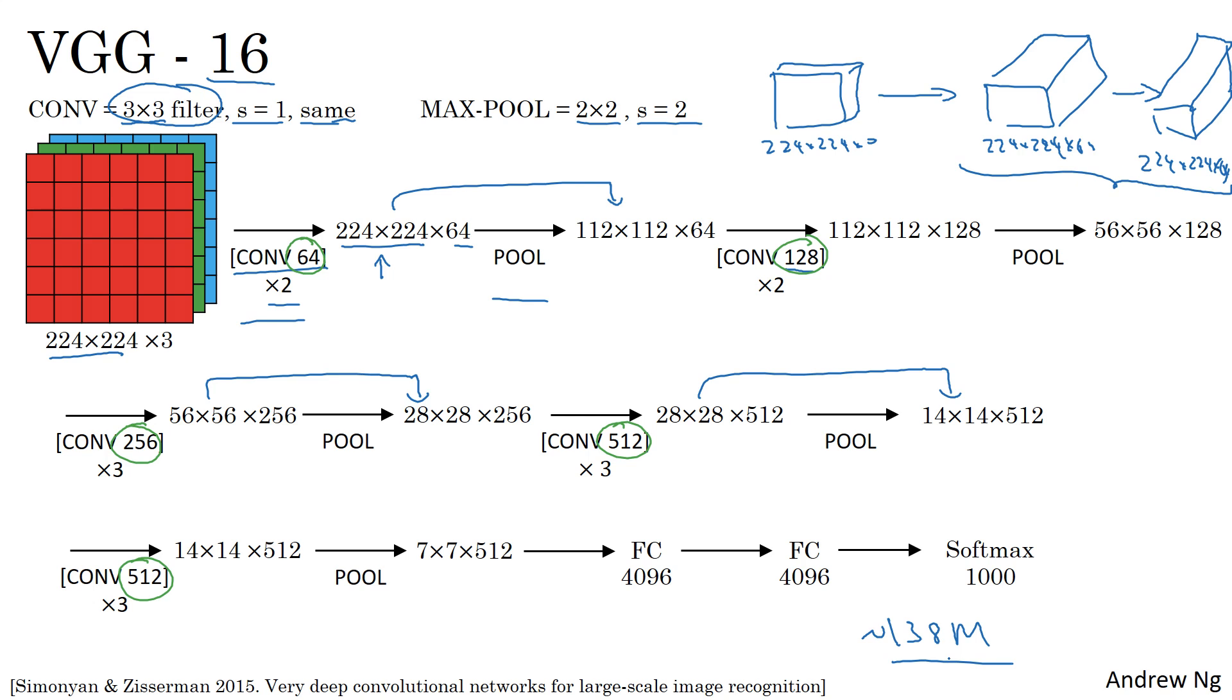The main downside was that it was a pretty large network in terms of the number of parameters you had to train. If you read the literature, you sometimes see people talk about VGG-19. There's an even bigger version of this network. You can see the details in the paper cited at the bottom by Karen Simonyan and Andrew Zisserman. But because VGG-16 does almost as well as VGG-19, a lot of people will use VGG-16. But the thing I liked most about this was that this made this pattern of how as you go deeper, height and width goes down. It just goes down by a factor of two each time for the pooling layers, whereas the number of channels increases. Here it roughly goes up by a factor of two every time you have a new set of conv layers. So by making the rate at which these go down and that go up very systematic, I thought this paper was very attractive from that perspective.